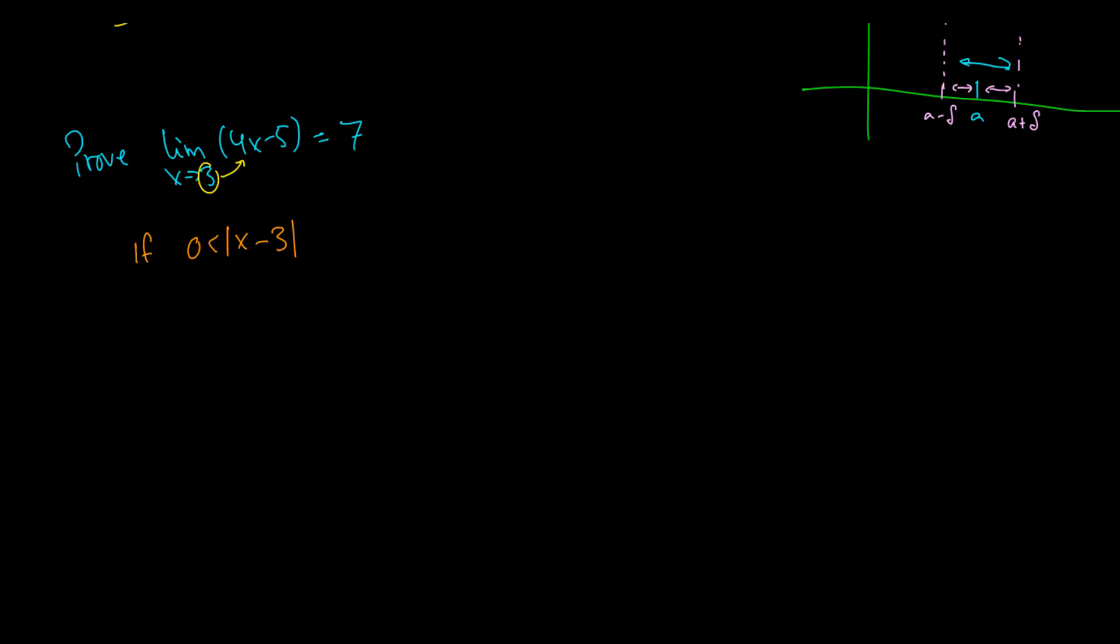which happens to be 3, is less than some number delta, then our function 4x minus 5 minus our limit 7 is less than some number epsilon.